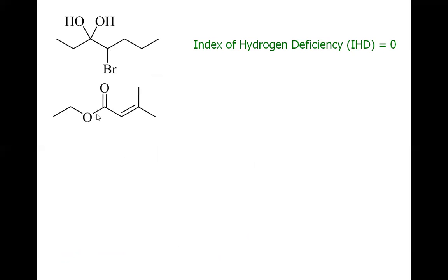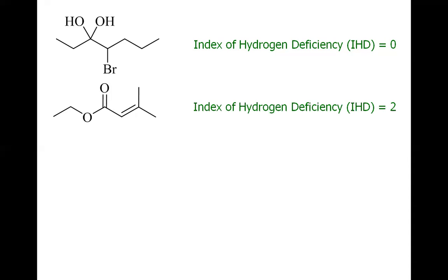For the second molecule, we have a double bond between carbon and oxygen, and also another double bond between carbon and carbon. Overall we have two double bonds, so we have two IHD for this molecule — one because of each double bond.